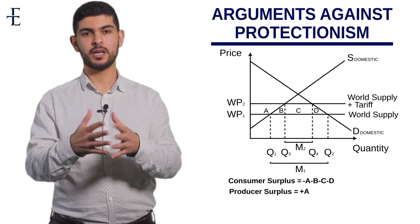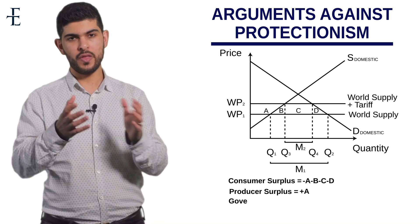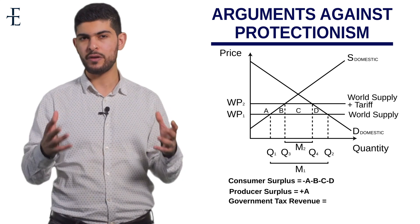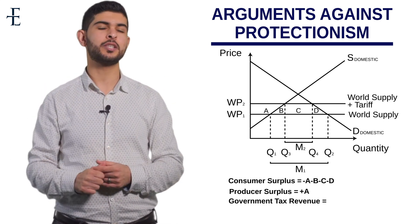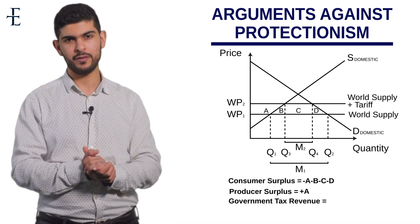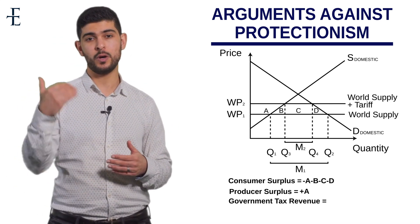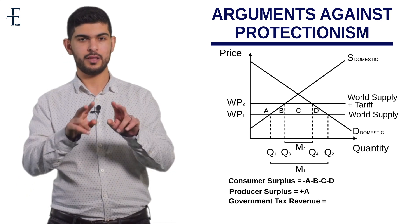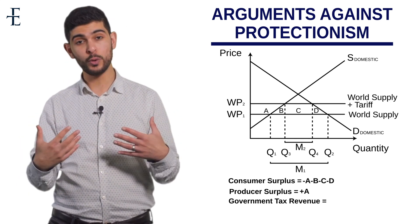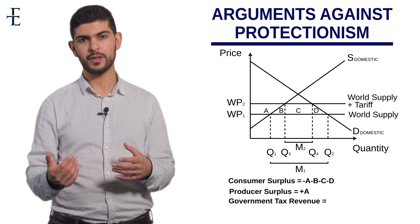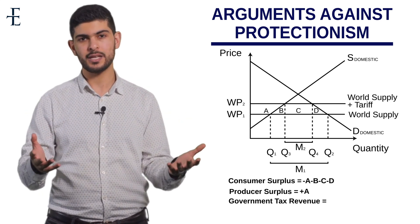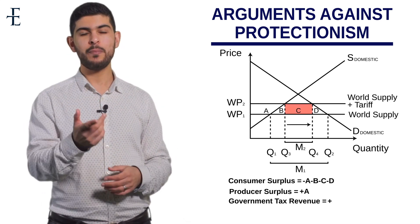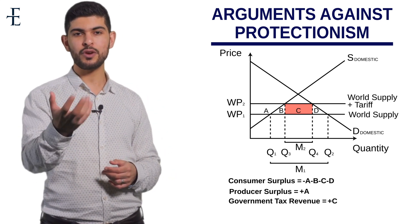The final player is the government. The government collects revenue when it imposes a tax. To calculate revenue, you need two things: how much they're taxing per unit — which is the difference between the old and new world supply, i.e., the tariff — and how many units are now being imported. The new level of imports is the width Q3 to Q4. Therefore area C represents the government's gain — they collect tax revenue equivalent to C.